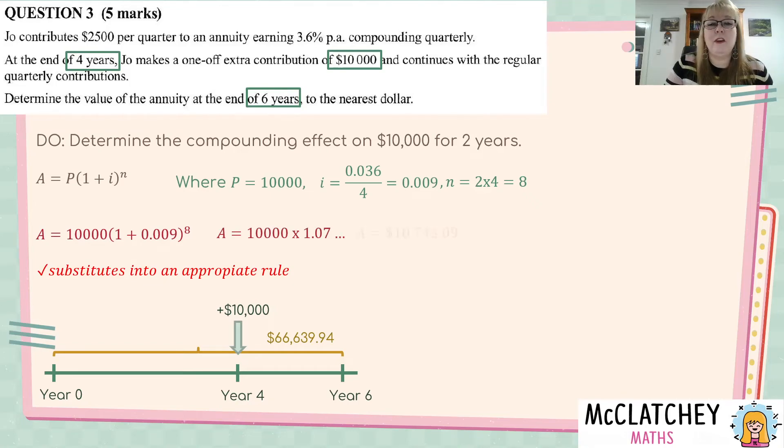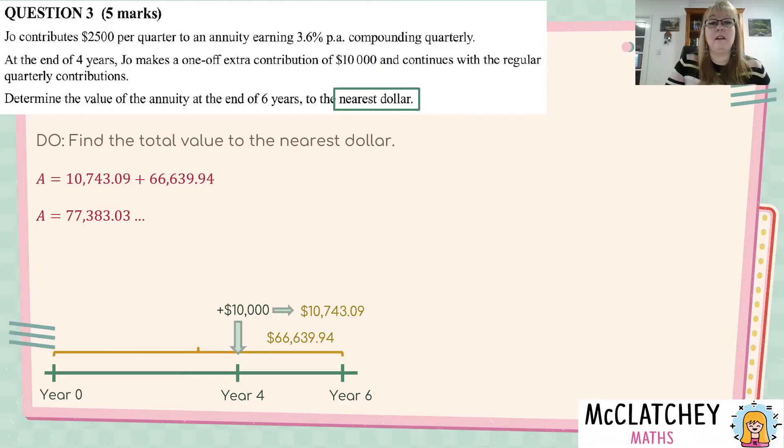It would possibly be tempting to maybe try and do this as an iterative function on your calculator. But you do need to actually use the formula and show what you're doing. Okay, so we just work that out a little bit further. And we get that that value of the $10,000 contribution is worth $10,743.09 at the end of the six years. Okay, so we can see down in our diagram now. We've got these two amounts that they're worth at the end. So, now we need to add the two together.